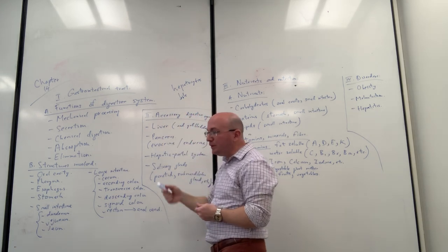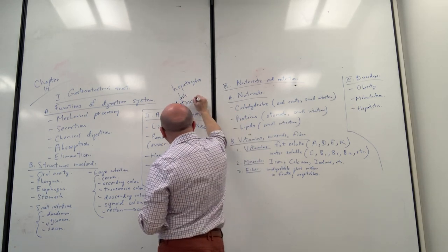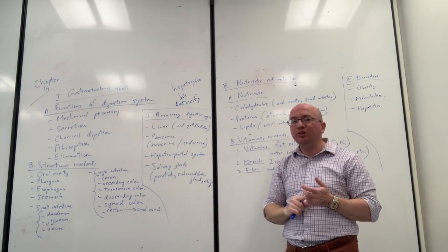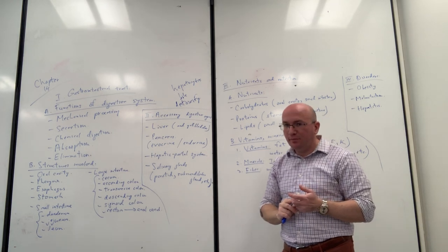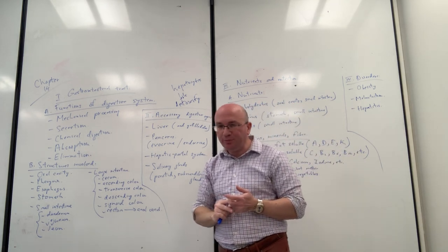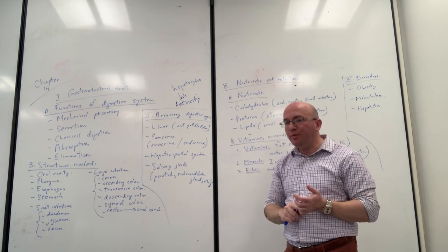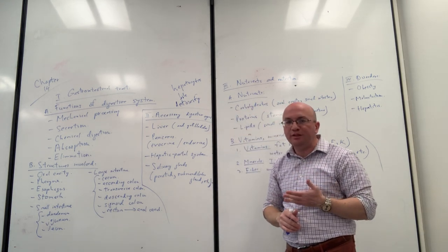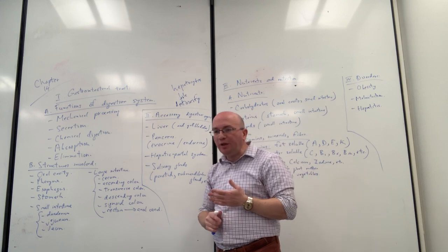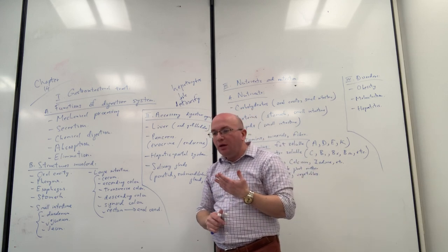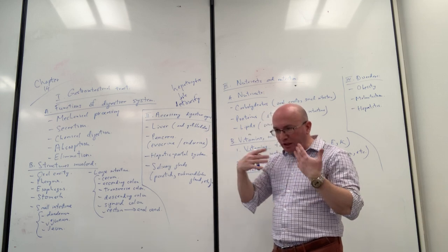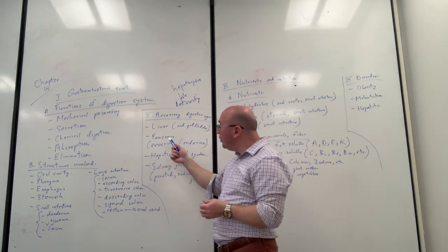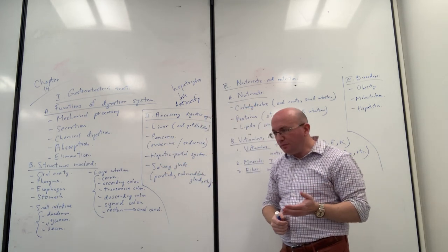To summarize the liver: it uses enzymes, produces bile, detoxifies substances, and produces proteins and hormones. For example, albumin — one of the most important proteins in the body — is produced by the liver, along with many other hormones and proteins. These many functions make the liver so important for survival that it is one of the most essential organs we have, critical not just for the digestive tract but for overall homeostasis of the body.